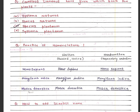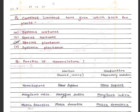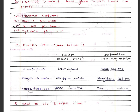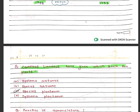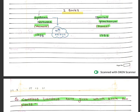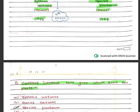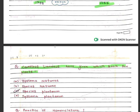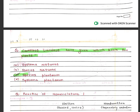Question: Carlos Linnaeus gave which book for plants? Carlos Linnaeus gave the book Species Plantarum in 1753 for plants. So the answer is Species Plantarum.